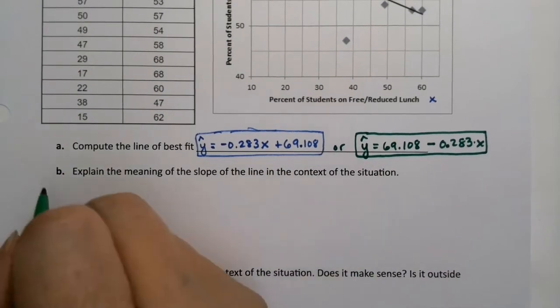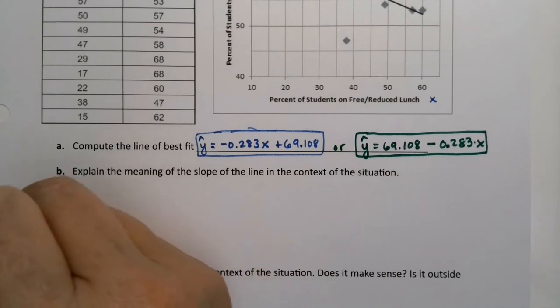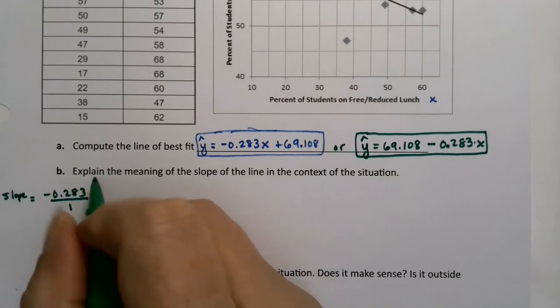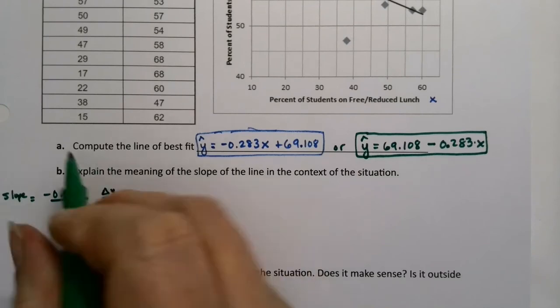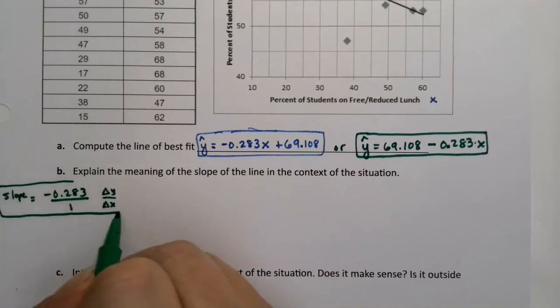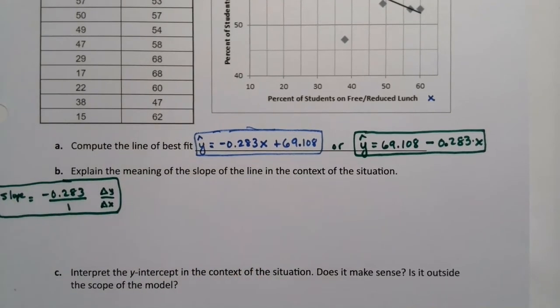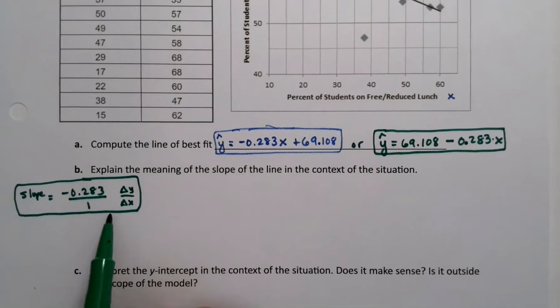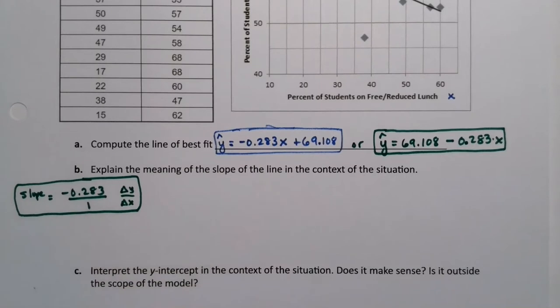Now let's look at the slope. The slope is negative 0.283. And I always like to think of it as over 1, because then I remind myself, that's change in y over change in x. And it helps you remember the interpretation piece. What the interpretation script says, that if x increases by 1, y is expected to increase or decrease by this negative 0.283.